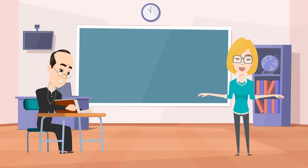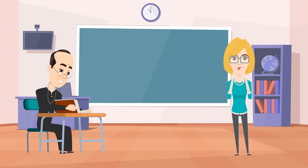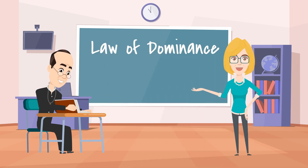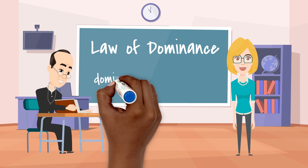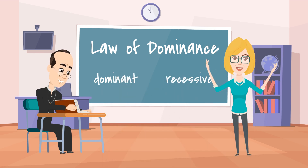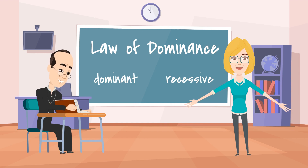Mendel's findings can be described in three laws. Let's dive into the first law, the law of dominance. The law of dominance states that inherited factors can be dominant or recessive. If an individual has inherited both a dominant and recessive factor, they will only display the dominant trait.